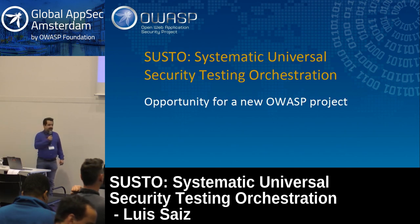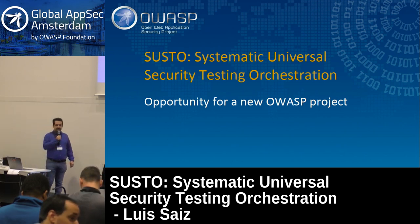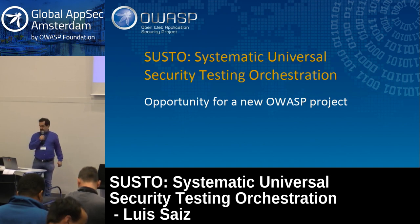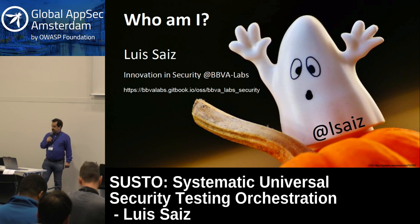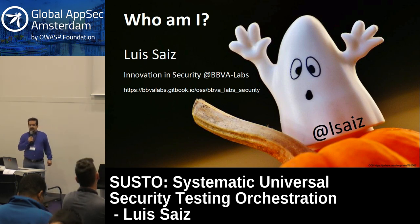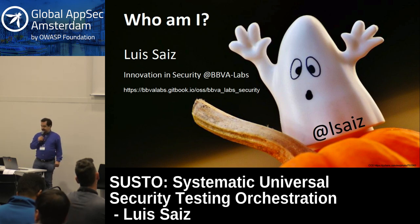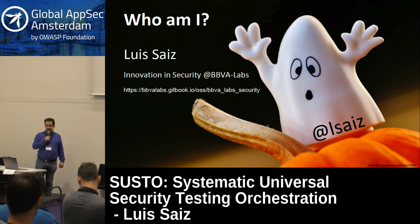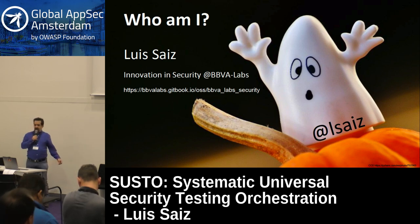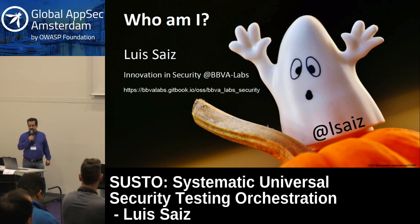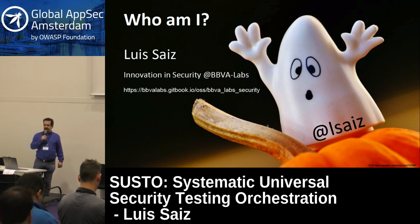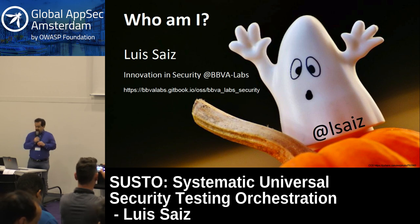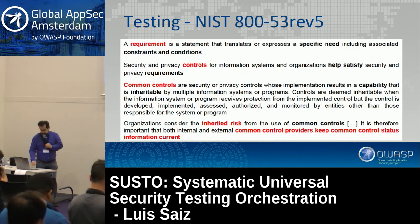Welcome everybody. This will be a talk about an opportunity to have a new OWASP project. I'm Luis Scythe. I'm heading the innovation and security group in the BBVA Labs — BBVA, a Spanish bank. We already have some work that we have open sourced. You can search on GitHub for BBVA or follow that link.